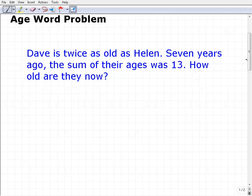Dave is twice as old as Helen. With word problems, you need to read the problem at least two or three times before you start doing anything. Make sure you comprehend the problem. I like to underline the actual question. Seven years ago, the sum of their ages was 13.